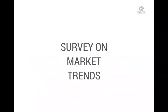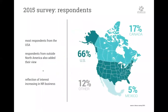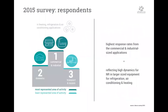We did a survey on market trends and here are some of the main results. Most respondents — two-thirds — come from the U.S., but notably more respondents are also coming from outside North America, possibly indicating they see a business opportunity there. Canada represented 17%, and Mexico slightly less. The highest response rates came from commercial and industrial-sized applications, which indicates high dynamics for natural refrigerants in larger-sized equipment for refrigeration, air conditioning, and heating, while the domestic, transport, and mobile sectors were significantly less represented.